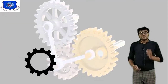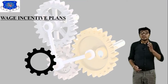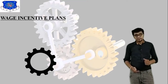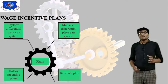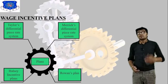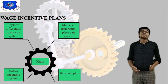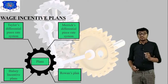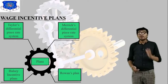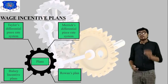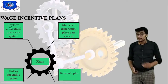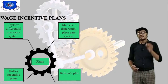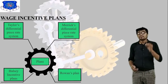Moving forward to wage incentive plans — here I have four different types. The first important plan is Taylor's Differential Piece Rate System, and the second is Merrick's Differential Piece Rate System.